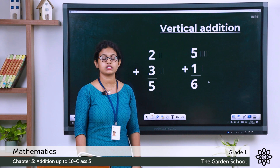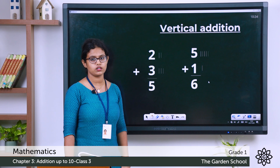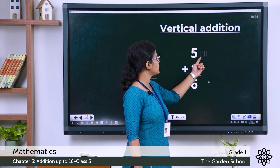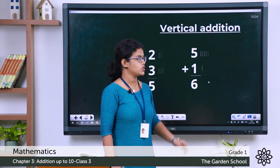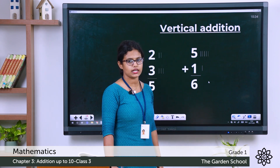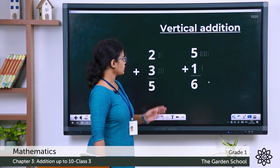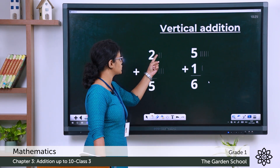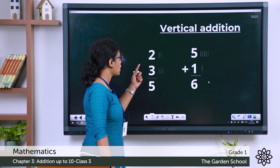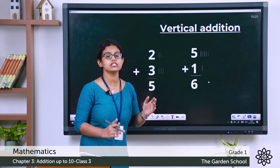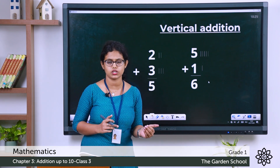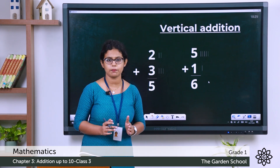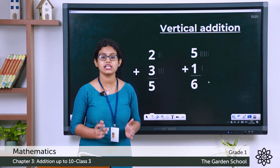Let's see more examples in vertical addition. Take 5 plus 1 written vertically. Draw 5 lines: 1, 2, 3, 4, 5. Then add 1 line. 5 plus 1 gives 6. Next, 2 plus 3: draw 2 lines, then 3 lines, total is 5. Whether you add horizontally or vertically, you will get the same answer.